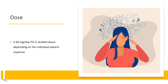Dose — Narcolepsy: 5 to 60 mg per day taken orally in divided doses, depending on the individual patient response. Administer at the lowest effective dose and individually adjust dosage.